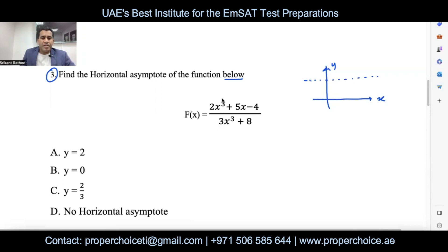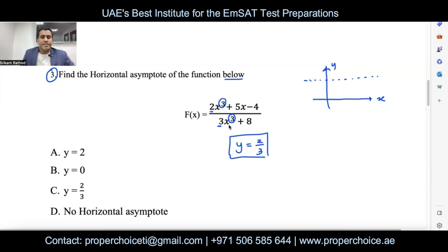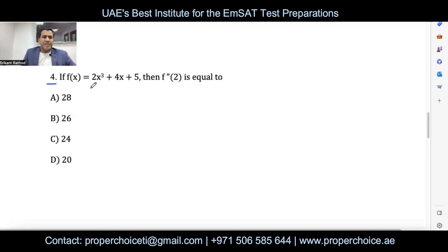Three conditions: (1) If the highest power of x in the numerator and denominator is the same, the horizontal asymptote is y = (leading coefficient of numerator) / (leading coefficient of denominator) — in this example y = 2/3. (2) If the highest power is in the numerator, the asymptote is y = ∞ (no horizontal asymptote). (3) If the highest power is in the denominator, the asymptote is y = 0. Here the powers are equal, so the answer is y = 2/3, option C.